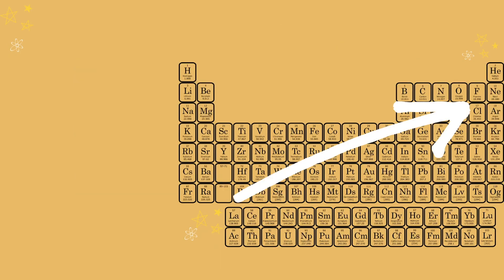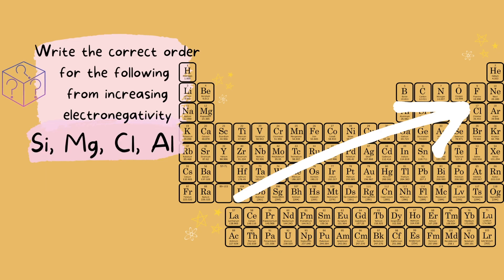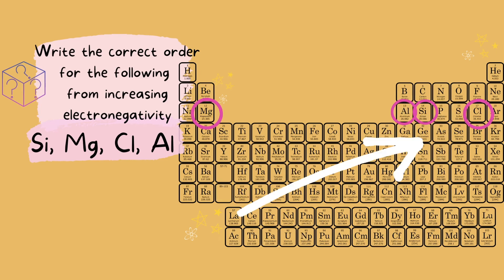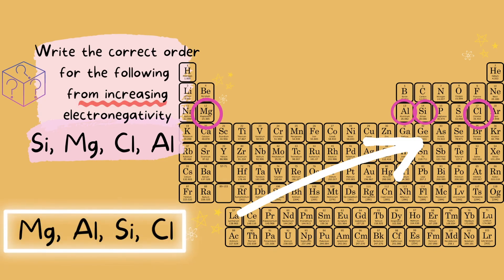Let's look at some practice questions. Write the correct order for the following from increasing electronegativity — increasing order means from least to greatest. We have silicon, magnesium, chlorine, and aluminum. Our answer here is magnesium, aluminum, silicon, and chlorine.